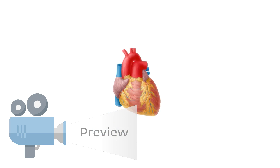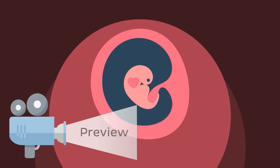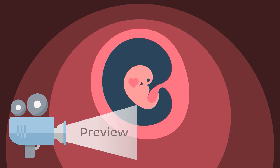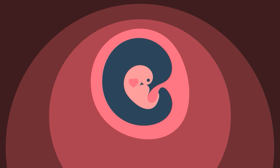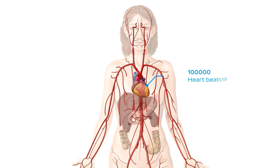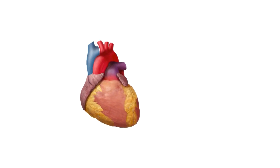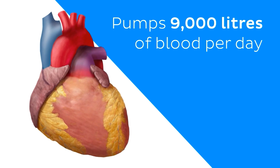The heart is certainly an incredible organ, which actually begins beating just four weeks into the gestation period. This beating continues throughout our entire lives, with about 100,000 heartbeats occurring each day, as the driving force behind oxygen and nutrient transportation around the body. In just one day, your heart pumps around 9,000 litres of blood. That's a lot of work!